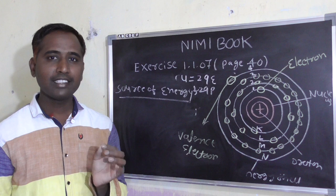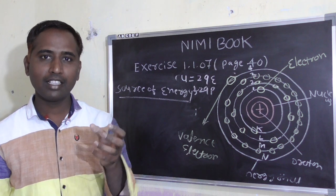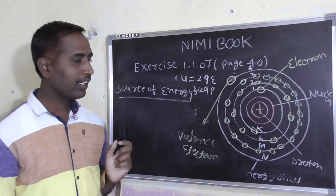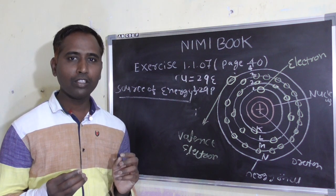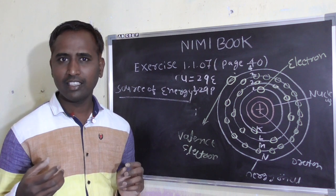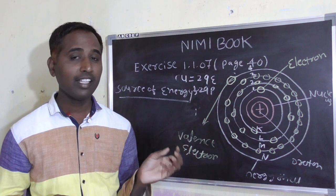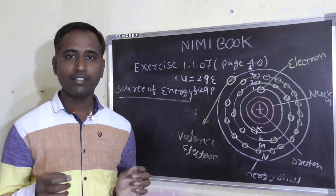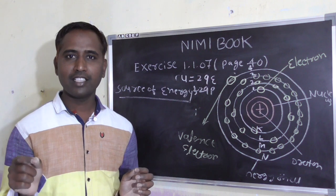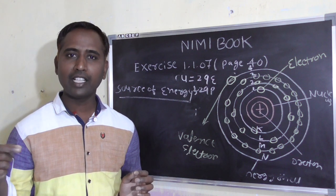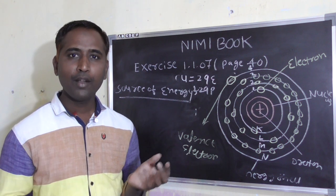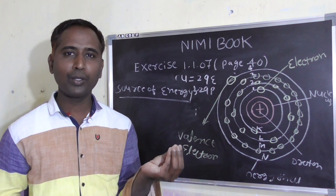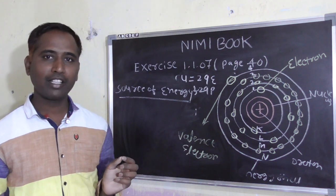Energy source का मतलब होता है जिस चीज़ से हमको ताकत आती, जहां से हमारको energy आती, उसको energy source बोलते हैं। जैसे कि हम लोगों को ताकत खाना खाने से आती। यह जो खाने को source of energy बोलते हैं। हमारे जितने भी two-wheelers, four-wheelers हैं, इन सबको चलने के लिए ताकत पेट्रोल और डिजल से आती — जो पेट्रोल और डिजल को energy source बोलते हैं।